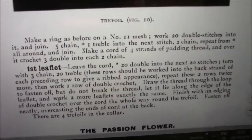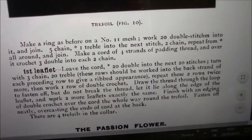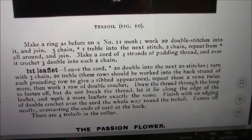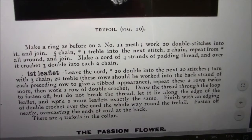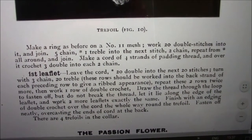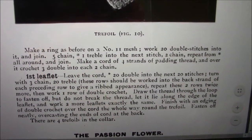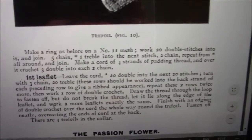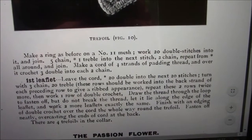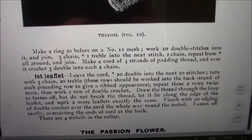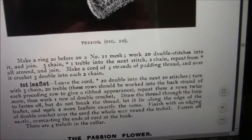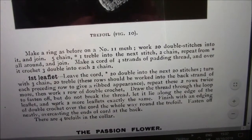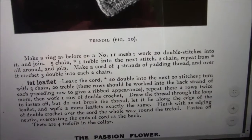It says make a ring as before on a number 11 mesh. The mesh is a little stick of a certain size that you could wind thread round to make a ring, and they came in various sizes. But I've never seen them sold so I don't know if they still exist. You mustn't forget that these patterns are over 100 years old. It says work 20 double stitches into it and join, then 5 chain, 1 treble into the next stitch, 2 chain, repeat from and go around.